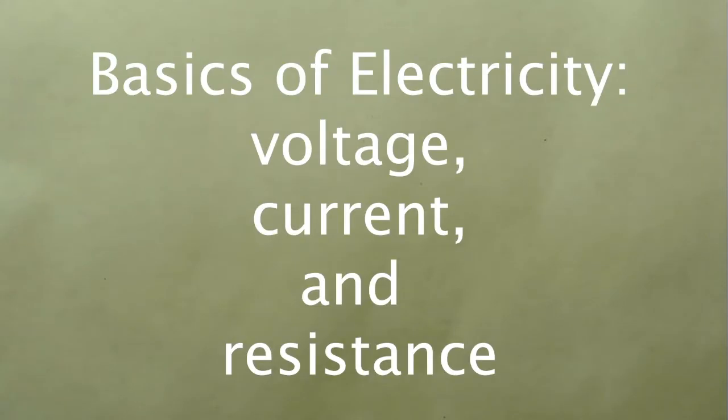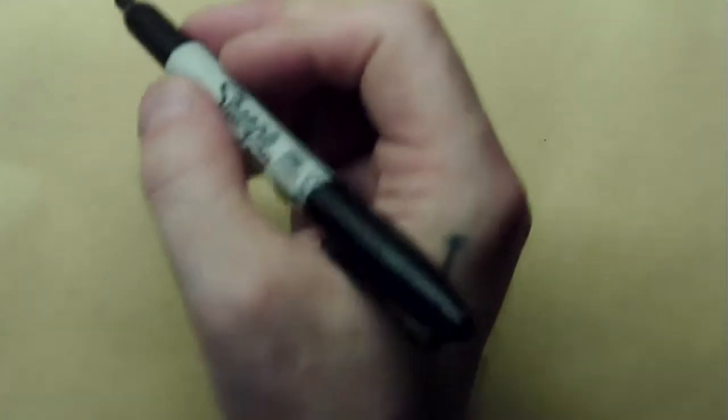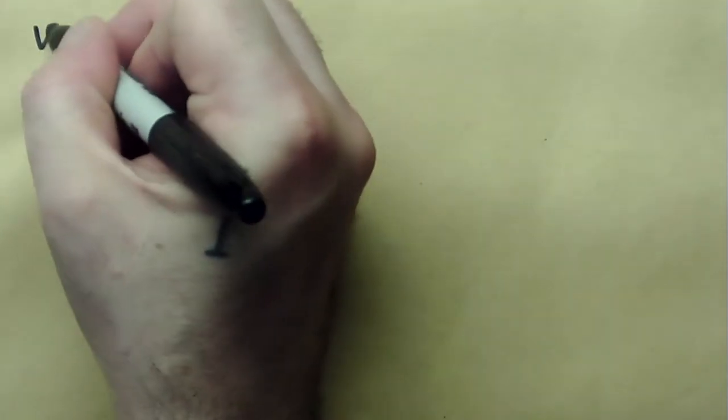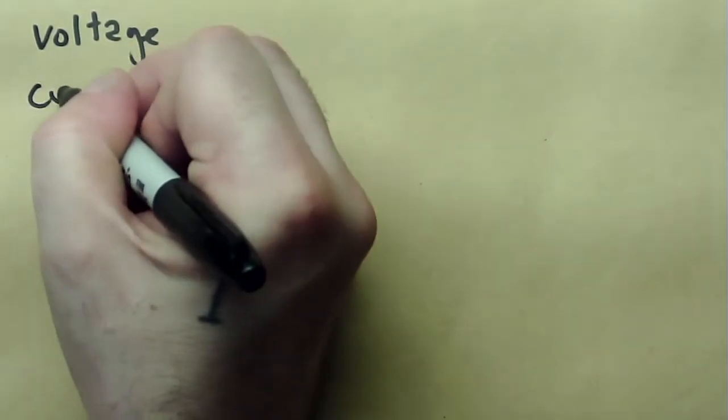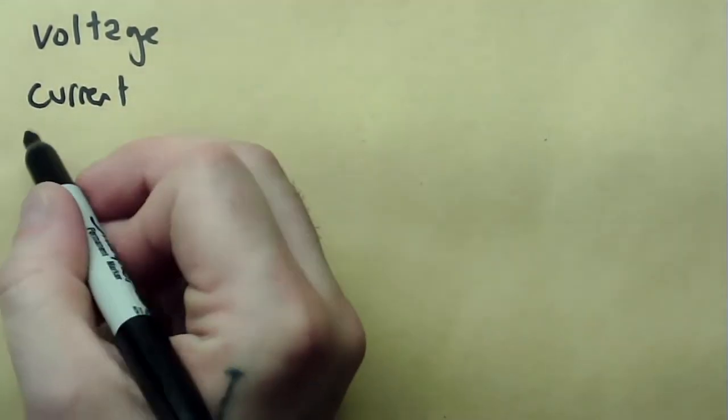Greetings all. Today we're going to be talking about the basics of electricity. Specifically, we're going to talk about three main characteristics of electricity, which are voltage, current, and resistance.